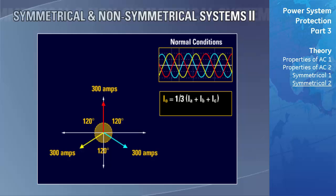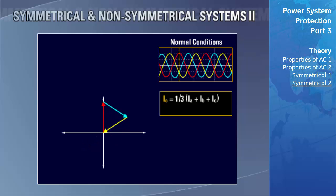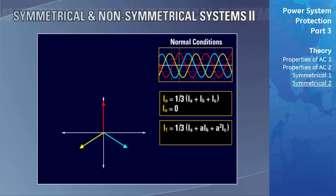Zero sequence uses the formula (Ia + Ib + Ic) / 3. By vector addition of all three phasors, they cancel each other out, resulting in a zero sequence of zero amps. The positive sequence uses the formula (Ia + A·Ib + A²·Ic) / 3. Phase B has an A operator applied, rotating the vector 120 degrees counterclockwise, lining it up with phase A. Phase C has an A-squared operator, rotating the phasor 240 degrees, also aligning it with phase A.